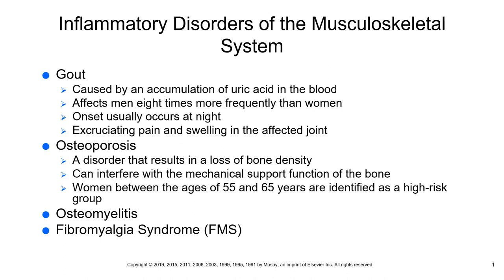Objective data: assess the joints, especially the great toe, looking for edema, heat, discoloration, and limited movement. Vital signs may reveal increased temperature, hypertension, tachycardia, and increased respirations. Assess urinary output carefully because tophi can actually form in the kidneys and alter renal function.